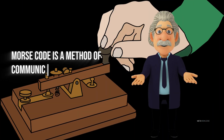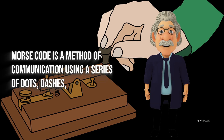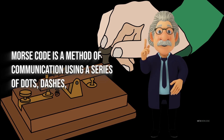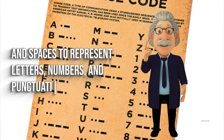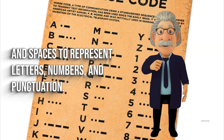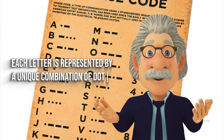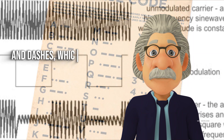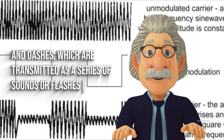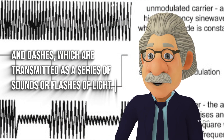Morse code is a method of communication using a series of dots, dashes, and spaces to represent letters, numbers, and punctuation. Each letter is represented by a unique combination of dots and dashes, which are transmitted as a series of sounds or flashes of light.